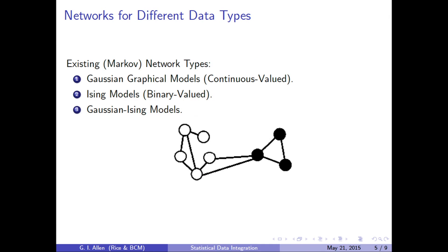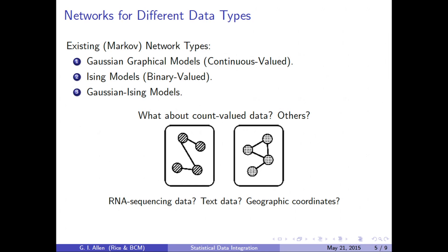There are also some very limited models that connect binary-valued and Gaussian-valued variables together. But what about all the other types of data out there? Think RNA sequencing, which is count data. Think of all the mobile health and population health data — text data, geographic data. How do you put this together and draw inferences and connections between these different types of variables?